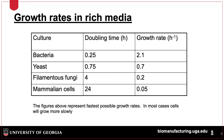Doubling times for bacteria are shorter than for fungi, and mammalian cells have the slowest doubling time, as shown in the table. Growth rates up to 2.1 per hour are achievable with bacteria, but practically fermentations are run at a slower rate, as inclusion bodies can form if cells grow too fast.